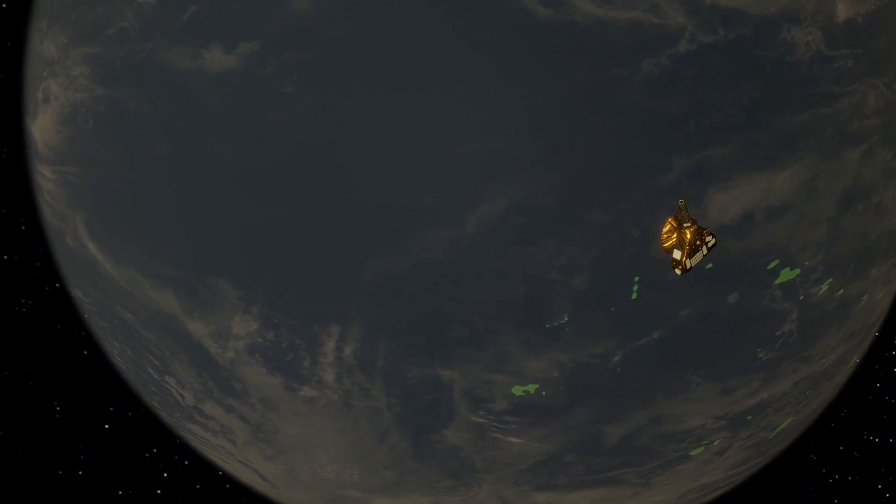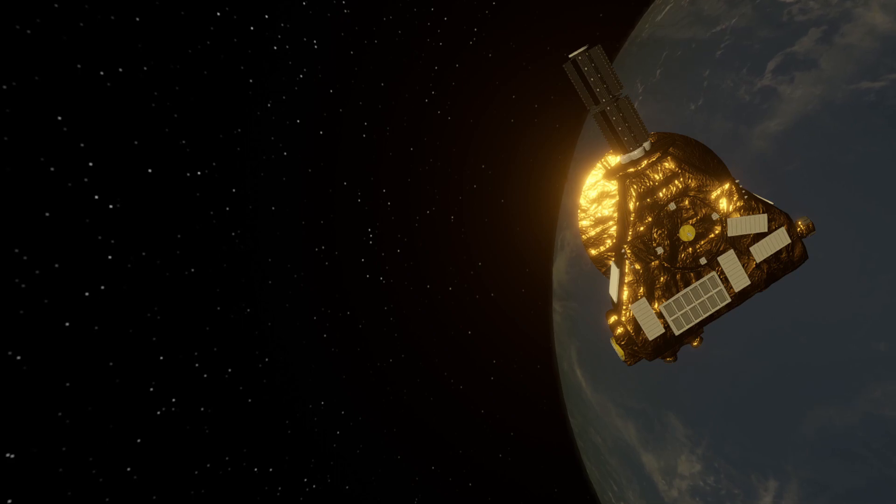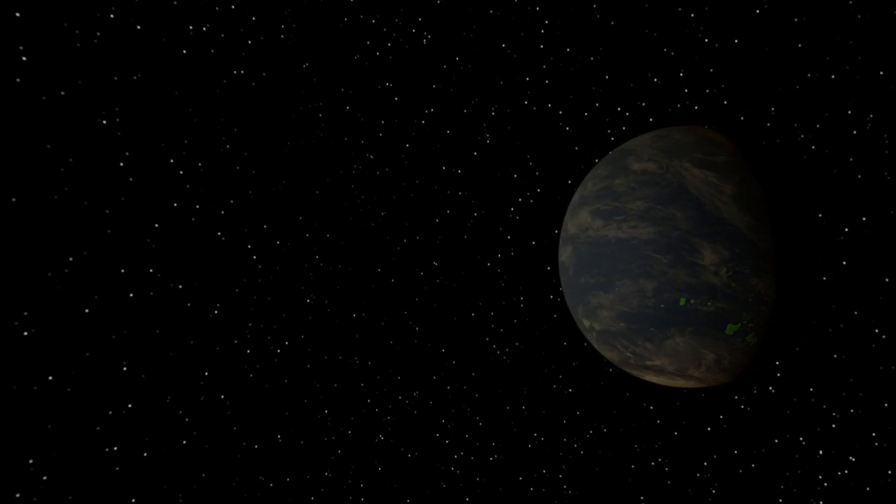These findings could be interpreted in several different ways, but it means that the planet is either a water world or a gas-rich mini-Neptune. Without accounting for its surface temperature, this planet more resembles an ice giant such as Neptune or Uranus, rather than it does Earth. And that's where things stood for three long years.